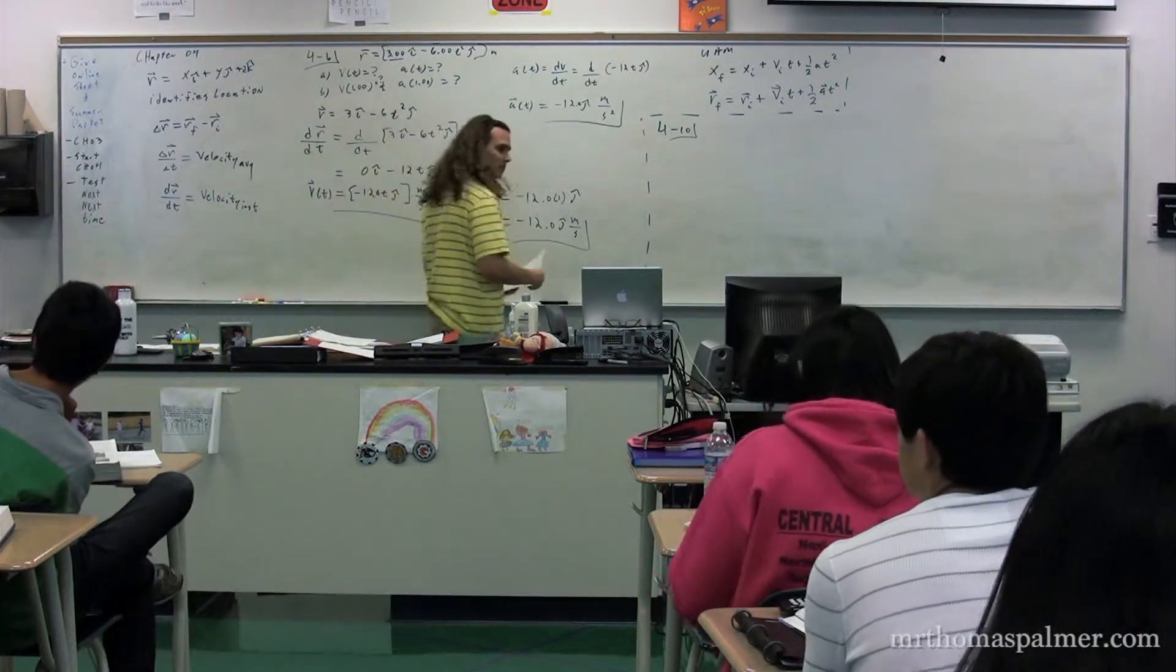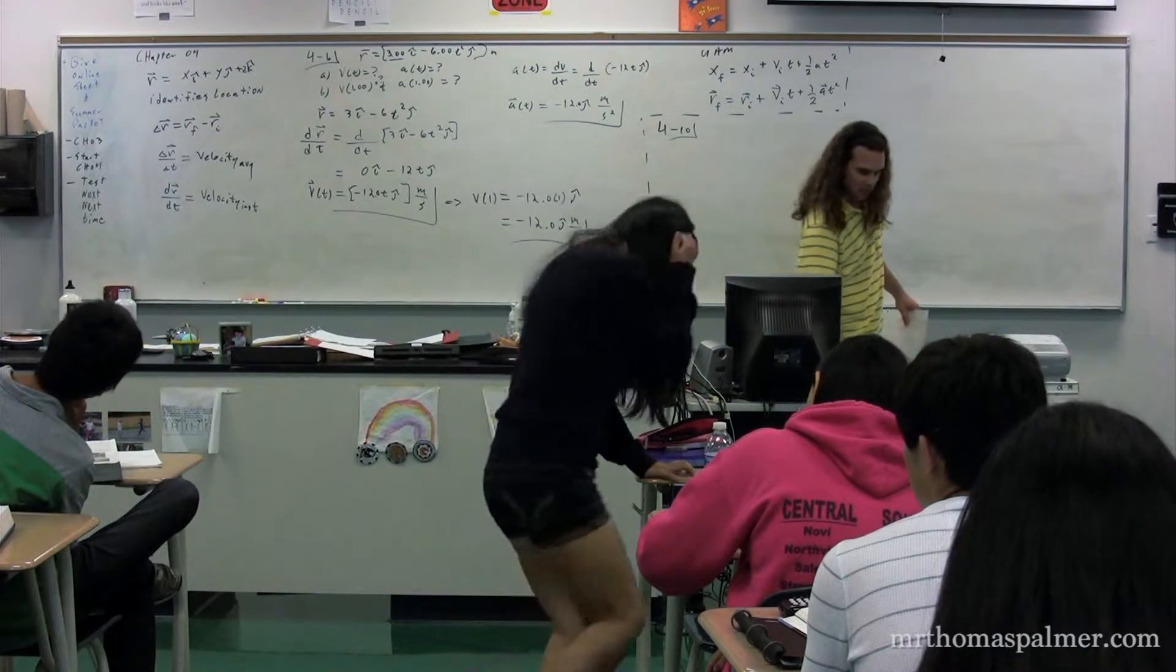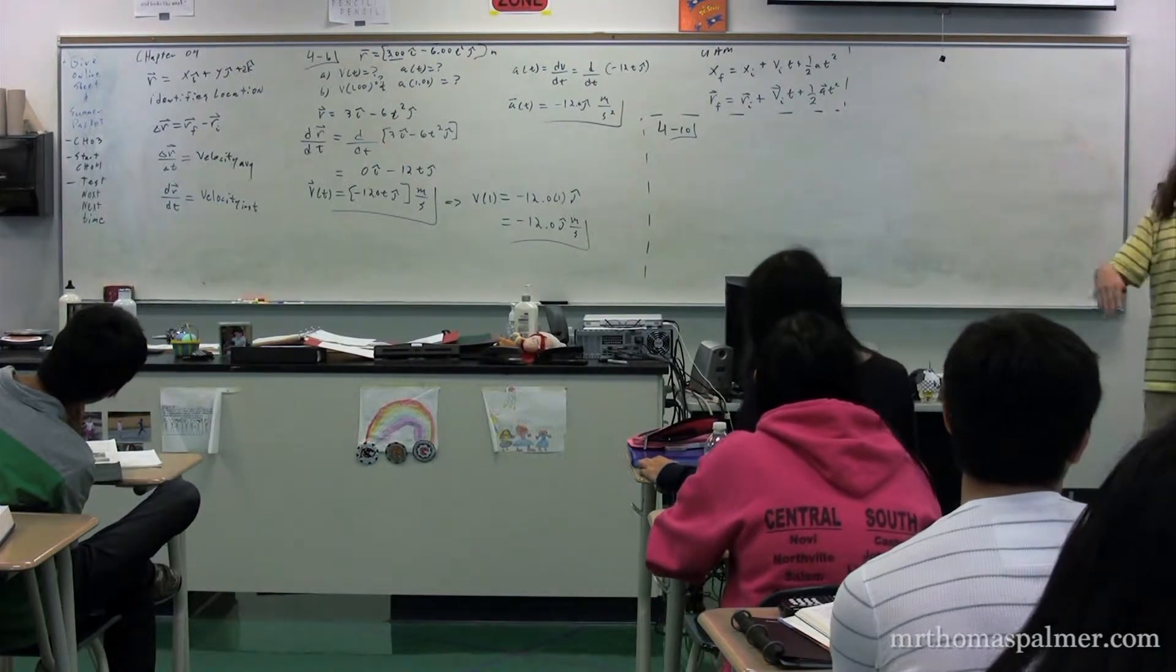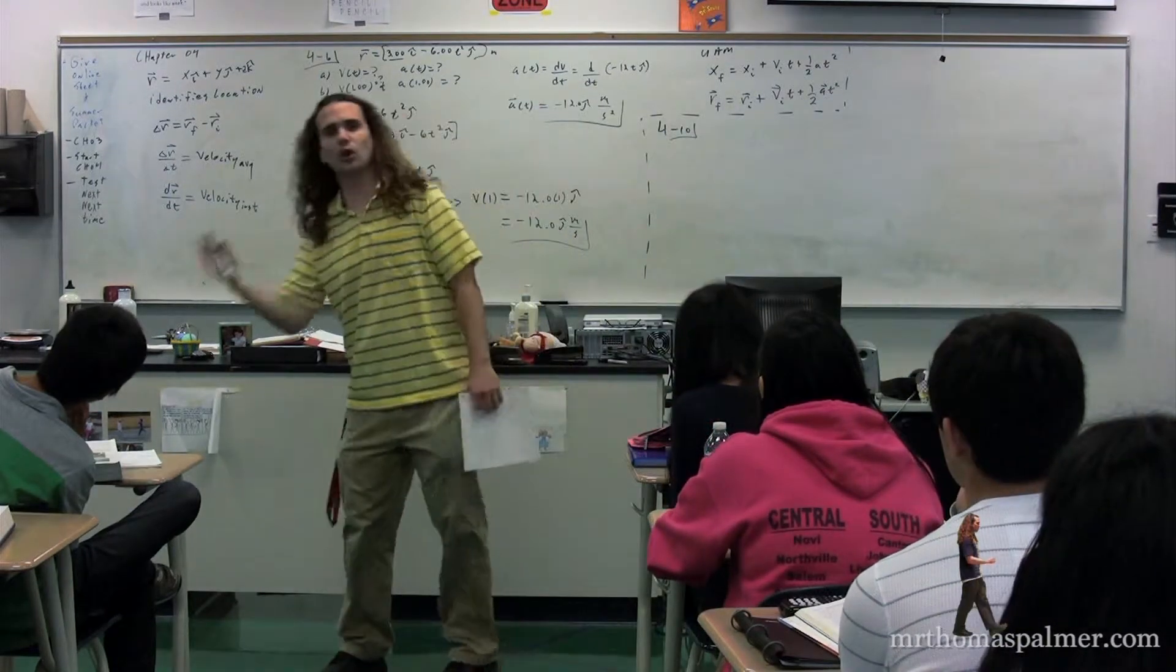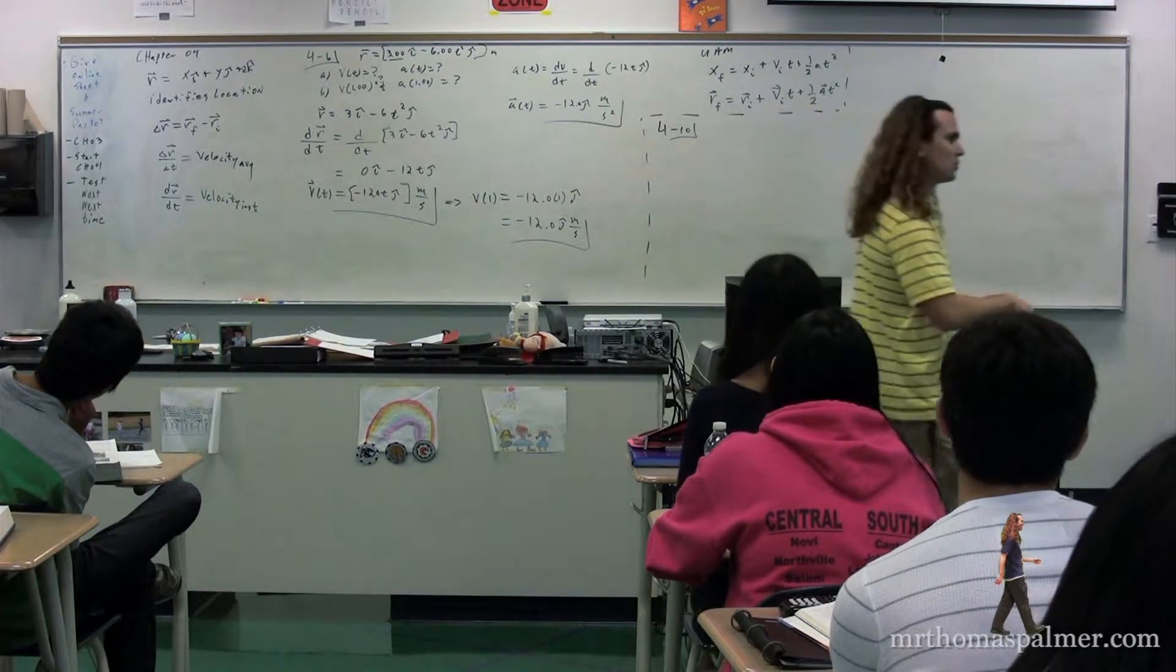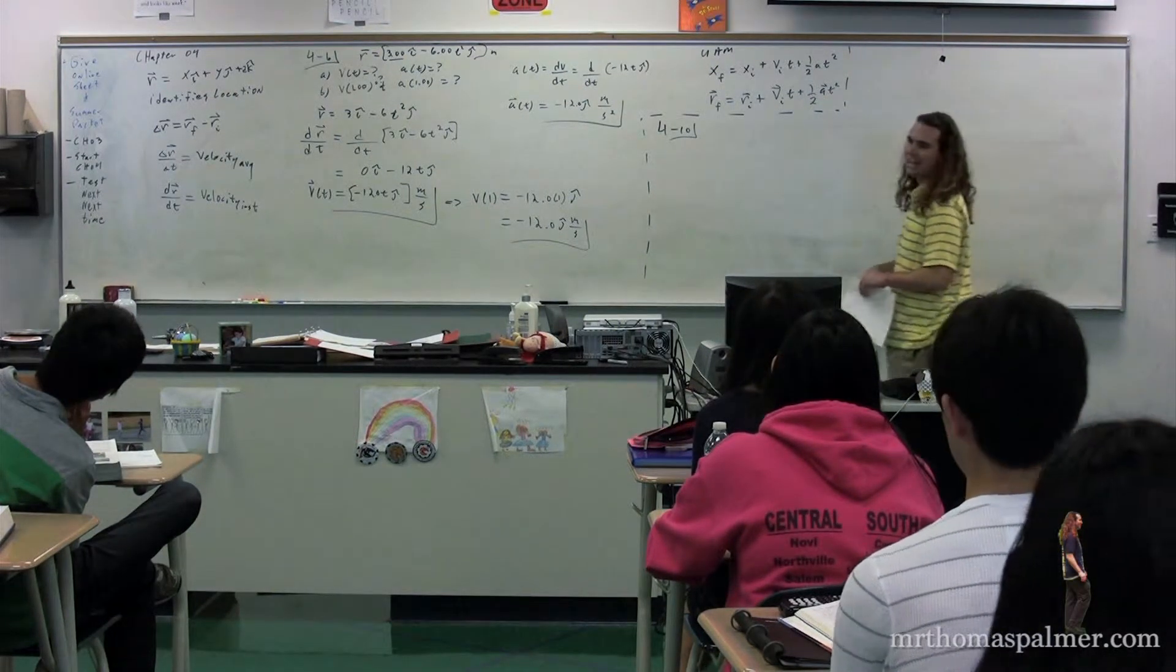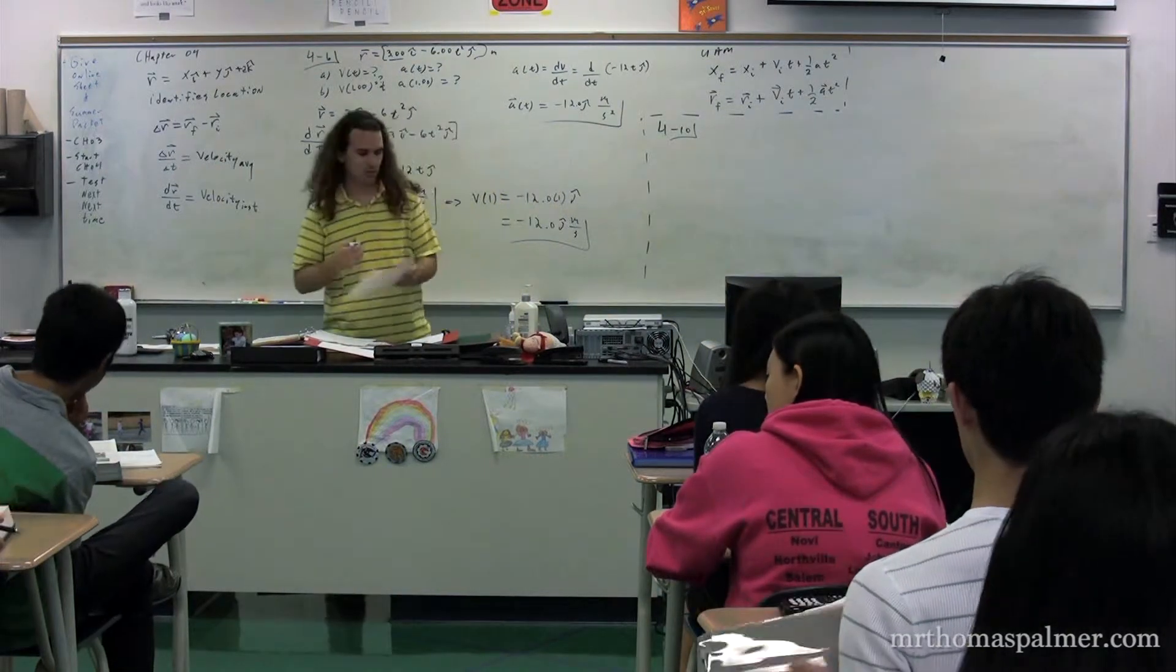What we're going to do is we're going to first go through problem 10 from chapter 4, and we're going to do it the way that you would be used to. Then we're going to redo the problem, and instead we're going to use unit vectors, just to show you the difference between the way we used to do it and the way you would do it using unit vectors.